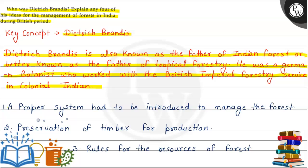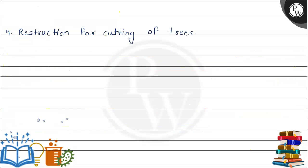His ideas were: 1. A proper system had to be introduced to manage the forest. 2. Preservation of timber for production. 3. Rules for the resources of forest. 4. Restrictions for cutting of trees.